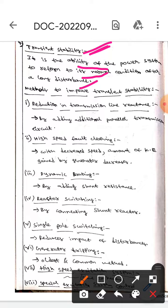after long disturbance. Now let's discuss methods to improve transient stability. The first one is reduction in transmission line reactance. Here we will add additional parallel transmission circuits. The next one is high speed fault clearing.